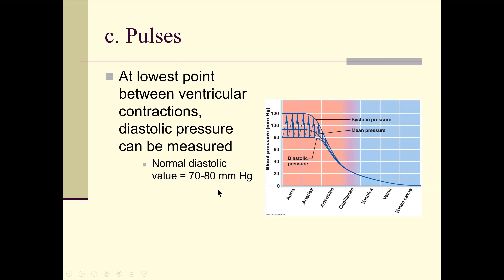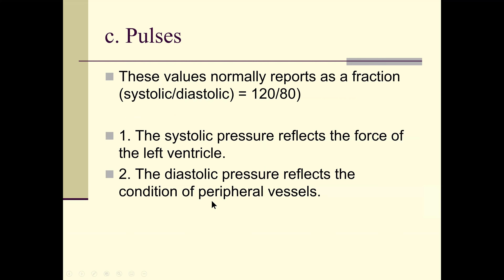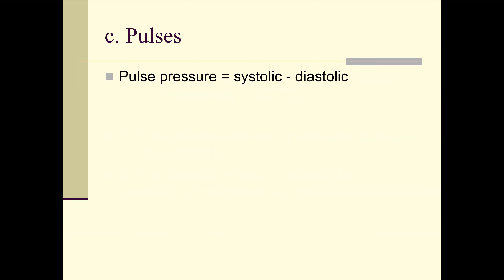Both my wife and I take blood pressure medicine. Doctors want diastolic to be less than 85 — it used to be less than 90. Systolic pressure reflects the force of the left ventricle. Diastolic pressure reflects the condition of peripheral vessels and the heart at rest. Pulse pressure is systolic minus diastolic — for example, systolic 120 minus diastolic 80 equals a pulse pressure of 40.